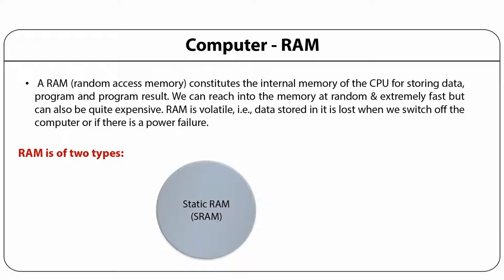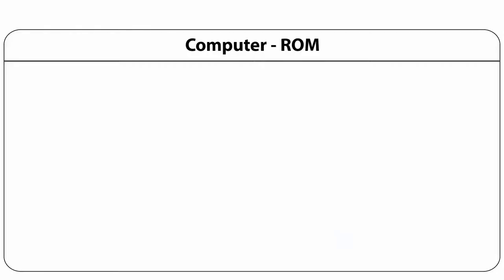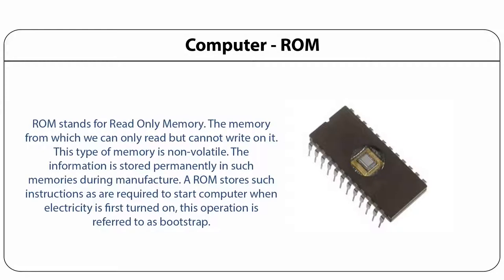ROM stands for read-only memory — the memory from which we can only read but cannot write on it. This type of memory is non-volatile and the information is stored permanently during manufacture. ROM stores instructions required to start a computer when electricity is first turned on — this operation is known as bootstrapping. Certain instructions are etched into the ROM at the time of manufacturing.